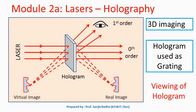Once the hologram is recorded, we want to see the three-dimensional image from it. The hologram does not contain a distinct image — it is just an interference pattern in the form of dark and bright fringes. This hologram can be used as a diffraction grating. To view the three-dimensional image, a laser beam identical to the reference beam used during construction is made incident on the hologram, and a diffraction pattern is obtained. In some directions, maximum intensity is obtained as the secondary waves from the hologram interfere constructively.